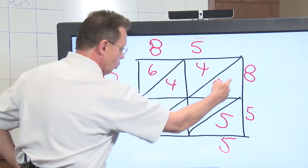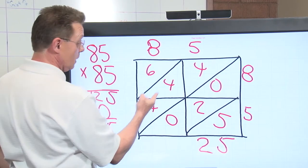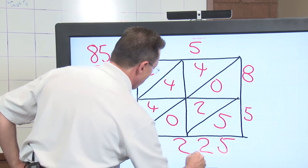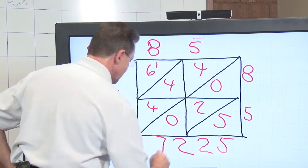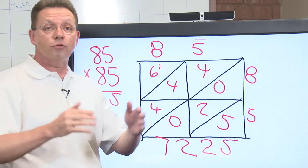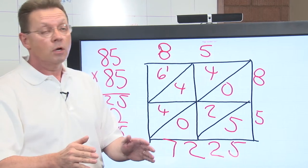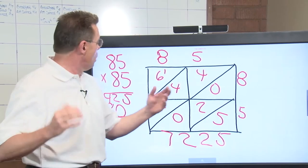The total in this triangle? 5. The total in this trapezoid? 12. Carry the 1. 7, 2, 2, 5. And this works no matter if you're doing 3 numbers times 2 numbers, or whatever number you want to put in here.